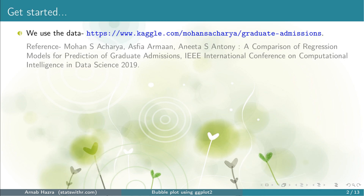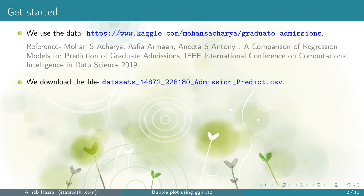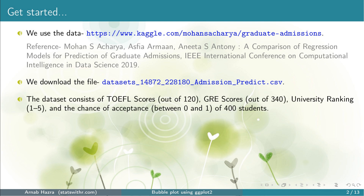For demonstration we used the dataset Graduate Admissions from Kaggle. This is a highly voted dataset. We used this same dataset for our tutorial on drawing a scatter plot. We downloaded the data as a CSV file. The dataset consists of several variables, and here we focus on four of them.